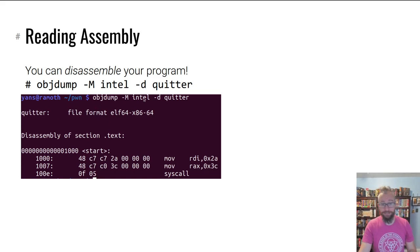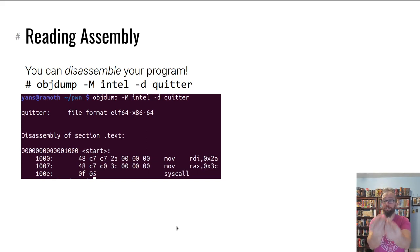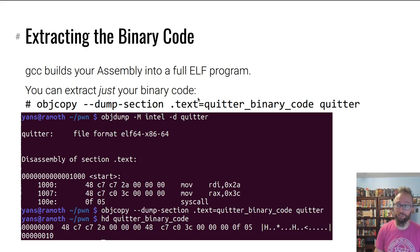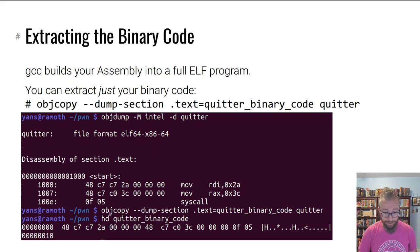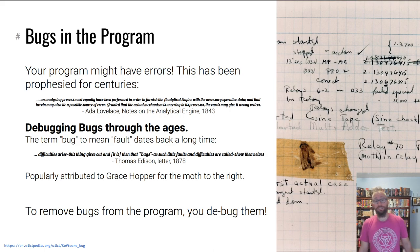The quitter ELF file that was created — as you saw in the lectures on ELF files in prior modules — is a big file with lots of metadata. What if you just want the raw bytes? For example, to submit them to the grading script for the assembly practice problems on Pwn College. You can extract them using objcopy: tell it to dump the .text section — where your binary code lives — into an output file from the ELF. Then hexdump that file and you see it's just the bytes. You can pass that to the grading scripts and you're good to go.